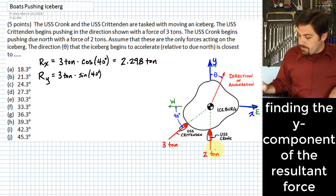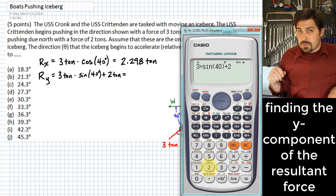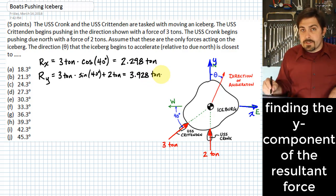But then we need to add on the effect of the USS Cronk, which is just going to be two tons which are applied entirely in that y direction. So what I see there is that I will have three times the sine of 40 degrees plus just two tons. And that ends up giving me 3.928 tons that act there in the upward direction.